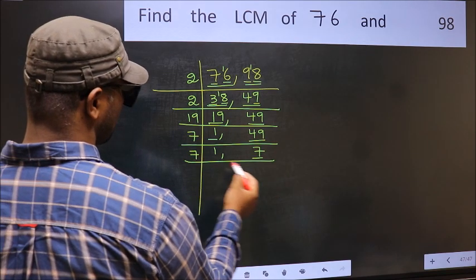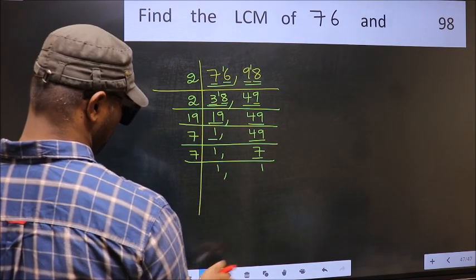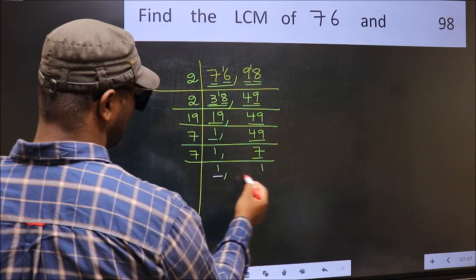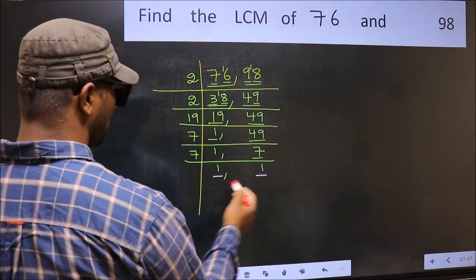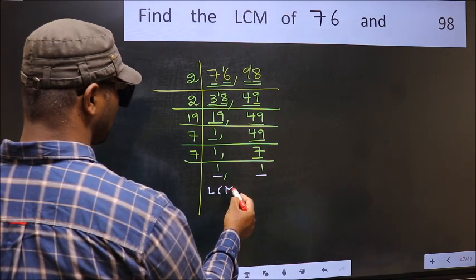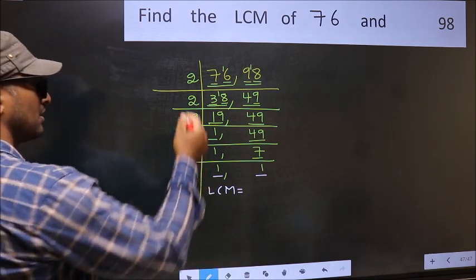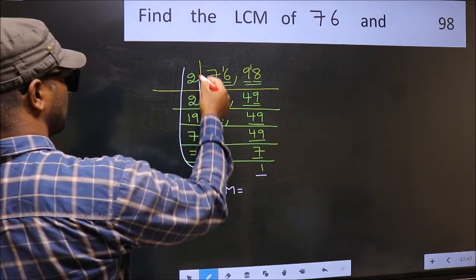So we got 1 in both the places so our LCM is the product of these numbers.